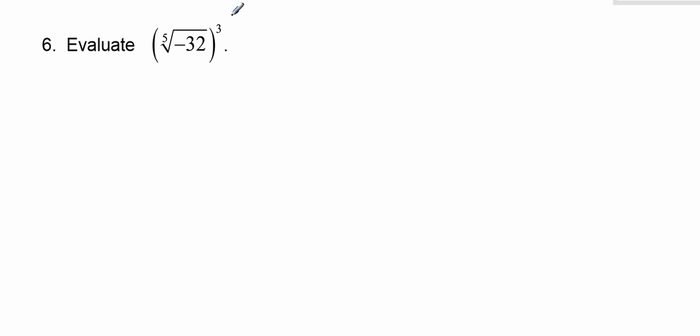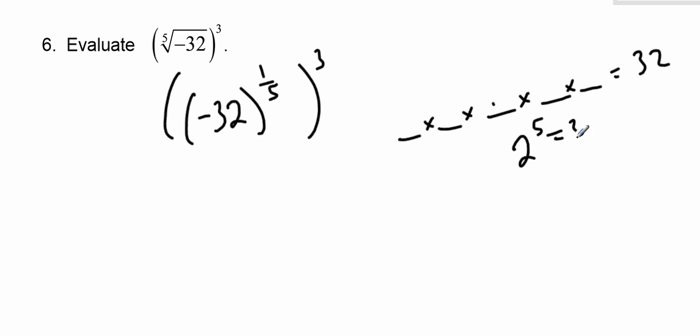So now I have to evaluate. So I have a fifth root, and then a cube. So you can certainly just do this in your calculator, hopefully, but I'll just do it in my head. So I need the fifth root of negative 32. So there's some number that when you multiply it by itself five times, you get 32. So that number's 2. I know that 2 to the 5 is 32, and therefore negative 2 to the 5 would be negative 32. So I know that what I have is negative 2, and now exponent 3. Well, negative 2 times negative 2 times negative 2 is negative 8. So just using the exponent laws.